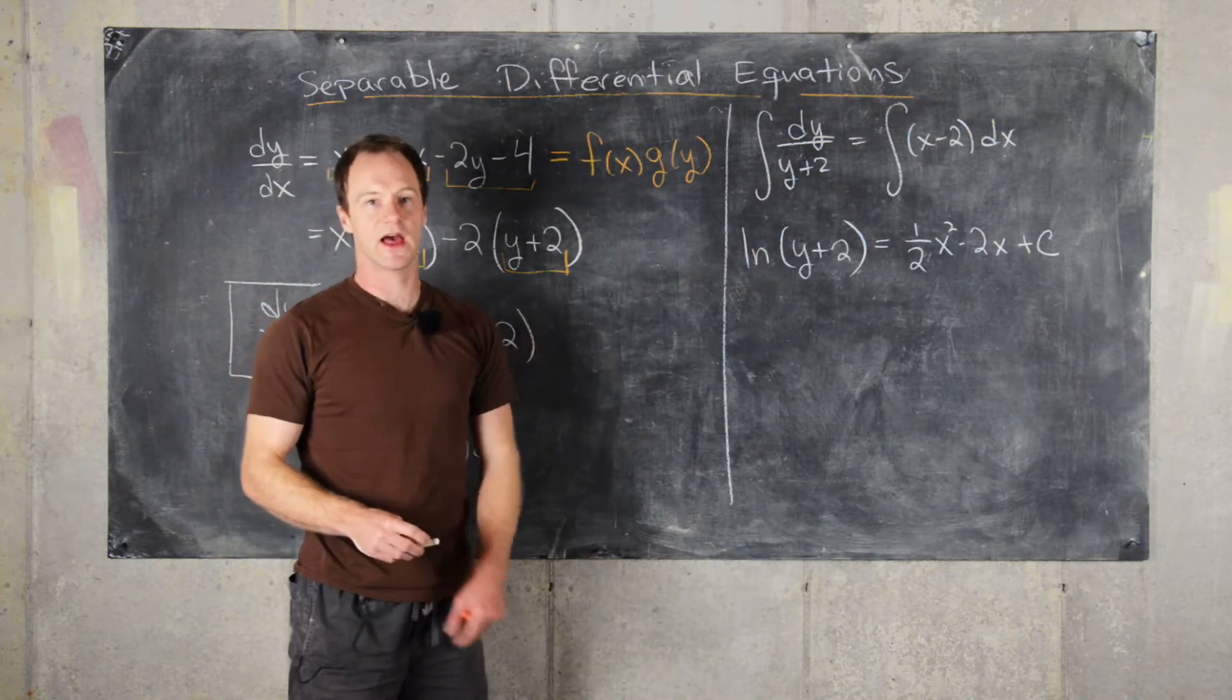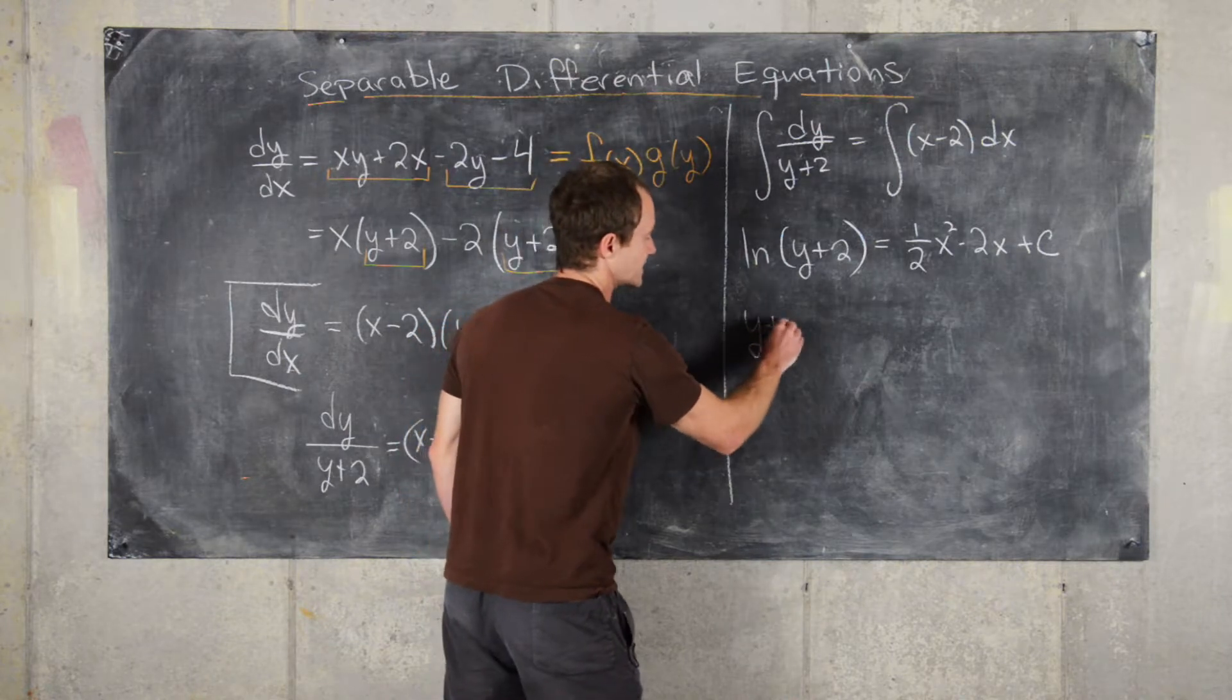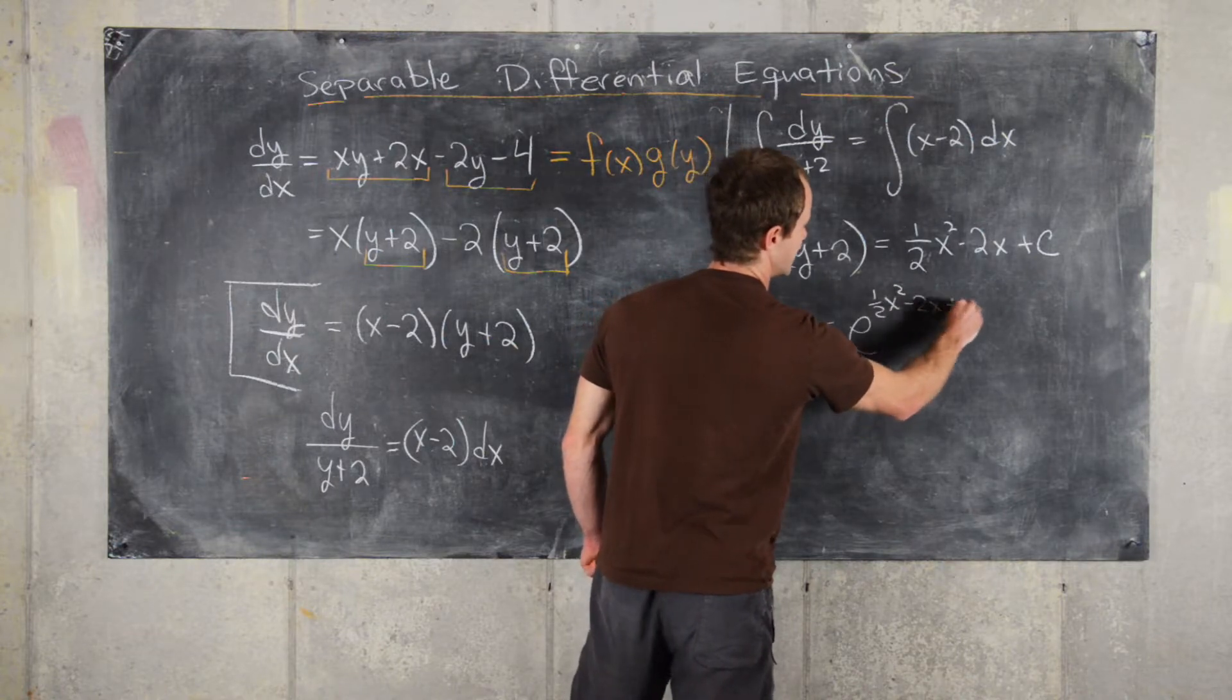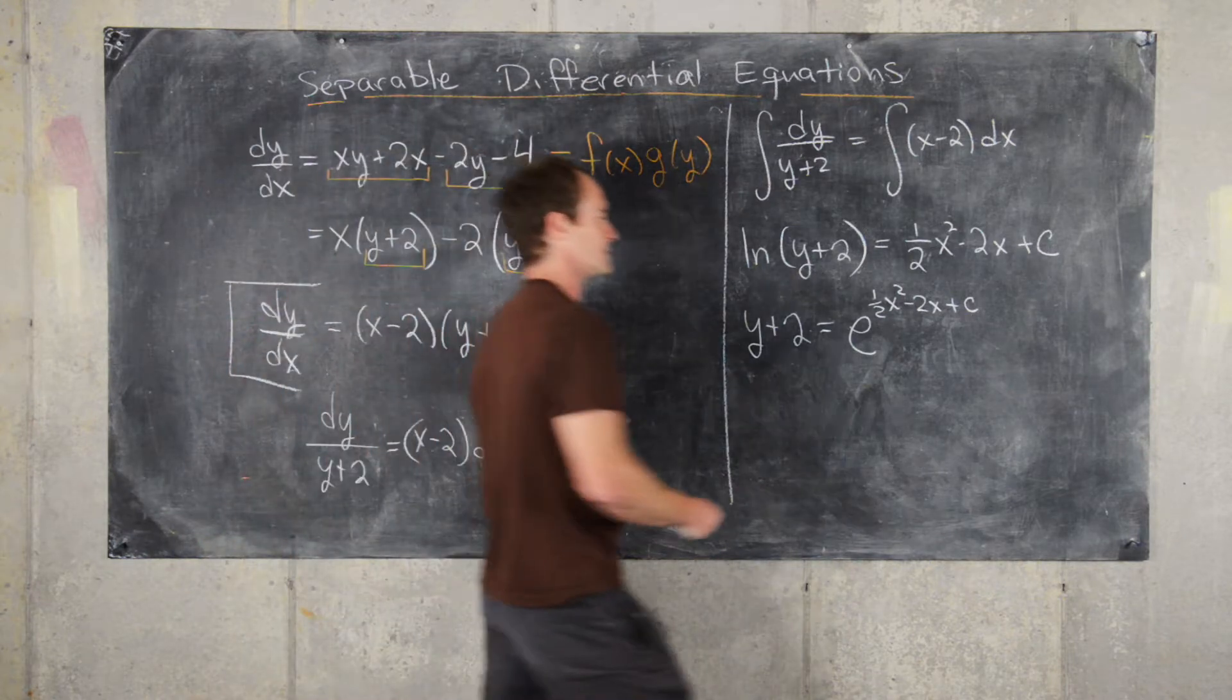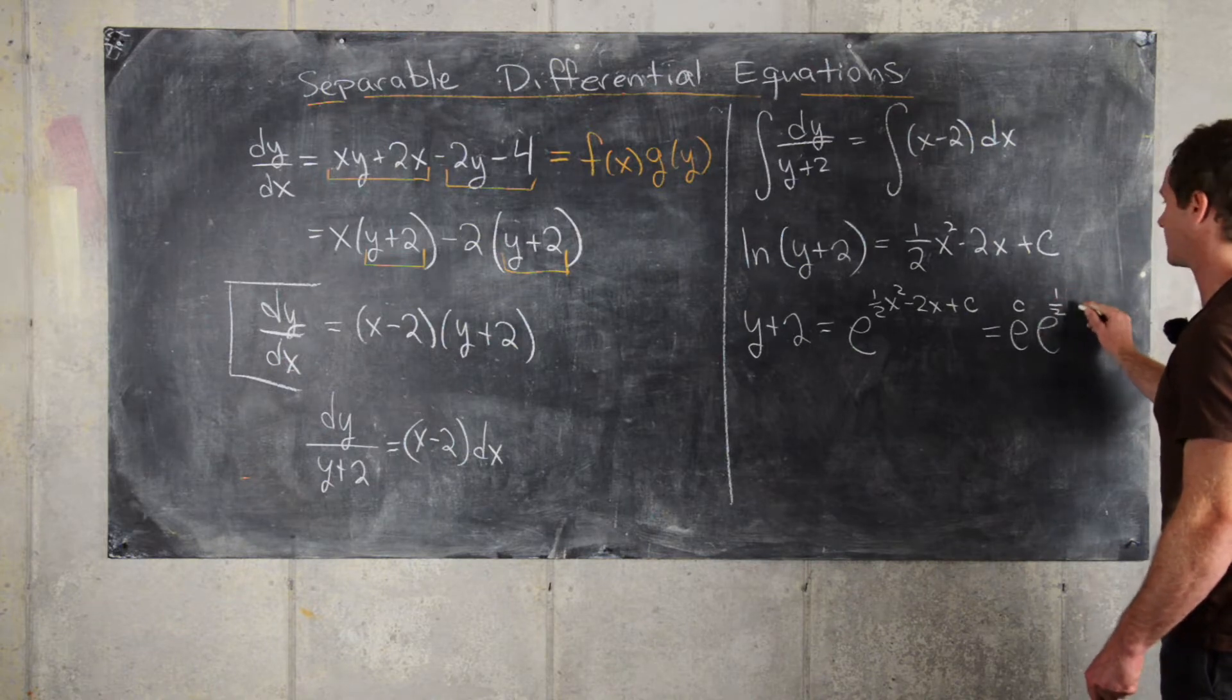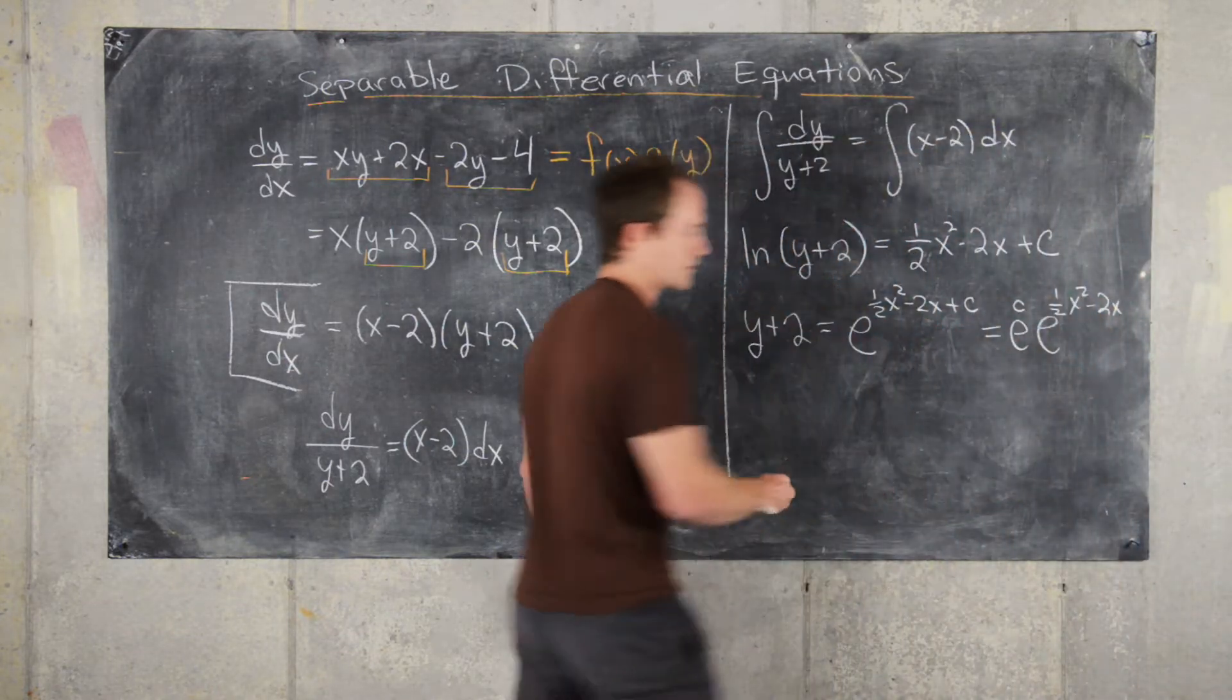So we can go ahead and solve for y. We'll get y plus 2 equals e to the (1/2 x squared minus 2x plus c). This gives us e to the c times e to the (1/2 x squared minus 2x) using exponent rules.